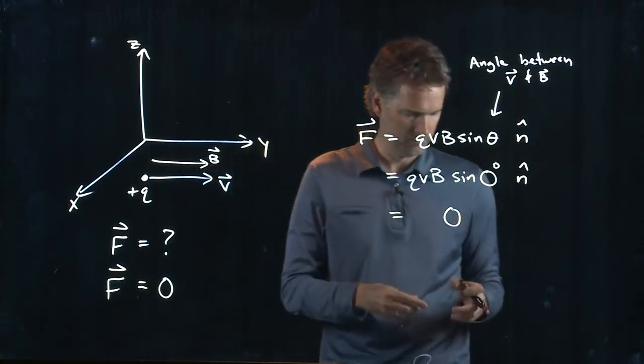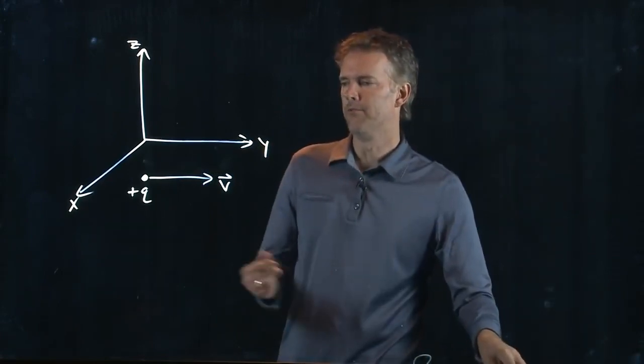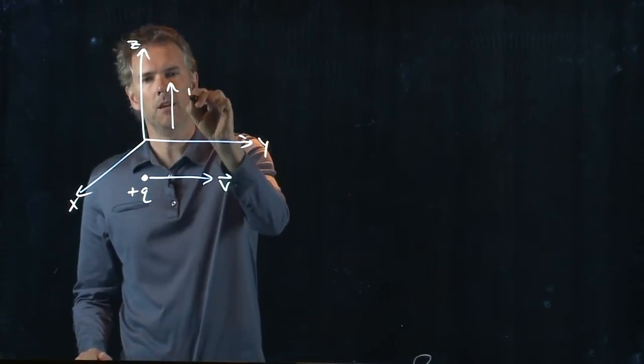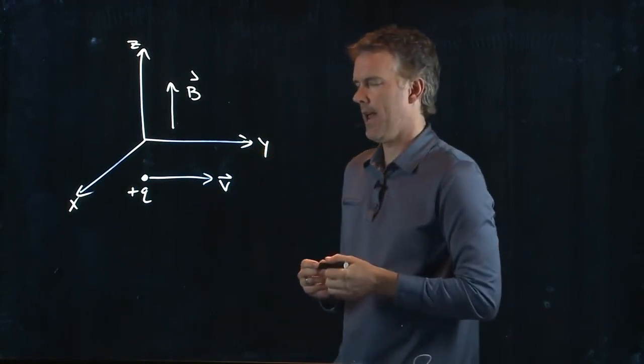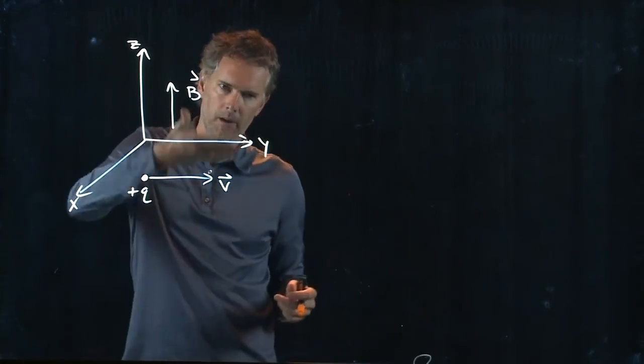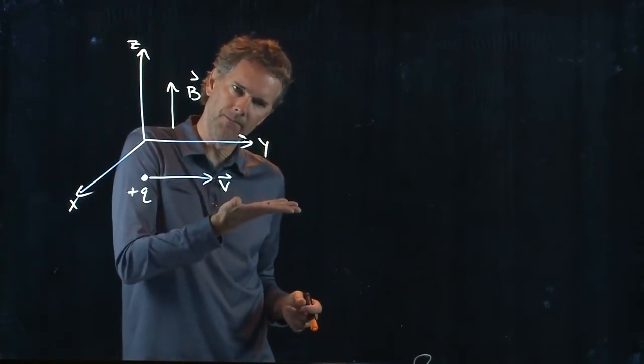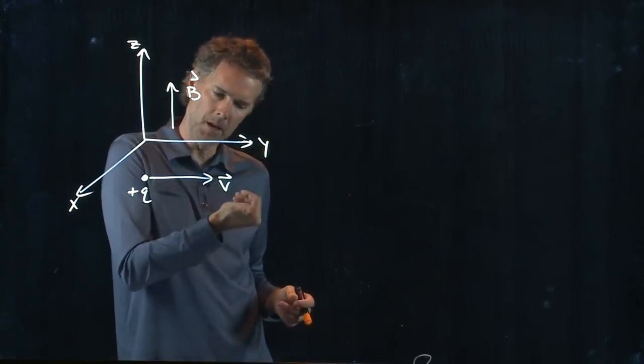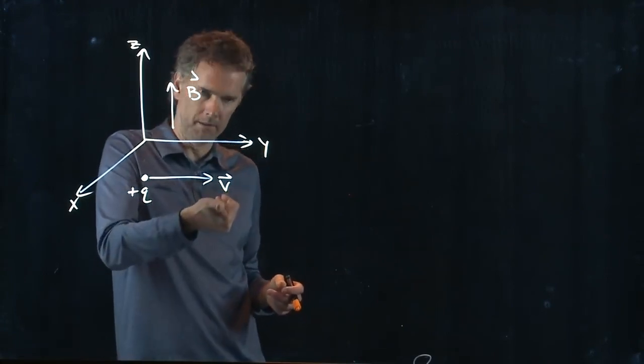So V is to the right still, but we're going to let our B be up everywhere. And now we do the right-hand rule for Q, V cross B. So V, everybody hold your right hand up. V, finger straight, curl into the direction of B. That's telling me that my thumb is the direction of the force, which is coming towards you guys.